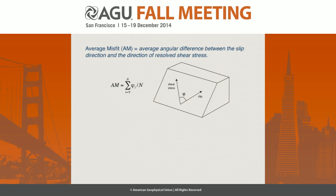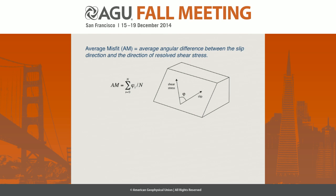To see whether the slip direction in the triggered earthquakes is the same as the applied shear stress direction, I'm using a very simple metric: the angular difference between those two directions on the fault plane. Over a catalog of earthquakes, I'll look at the average misfit as a metric of how consistent that catalog is with dynamic stress triggering in the direction of slip in the event.